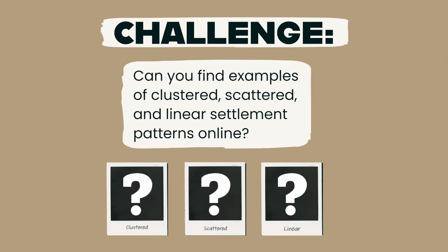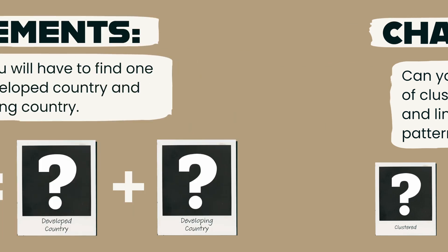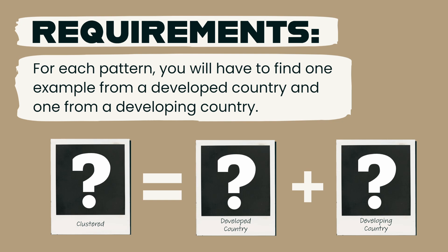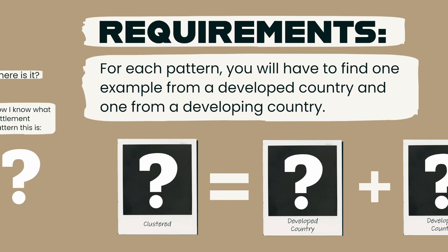Now here's a challenge for you: a settlement pattern scavenger hunt. Your task is to use the internet, specifically Google Earth or Google Maps, to find examples of clustered, scattered, and linear settlement patterns in different parts of the world. For each pattern, you'll have to find one example from a developed country and one from a developing country.